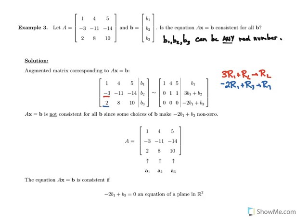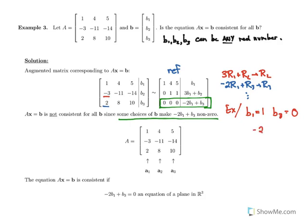Continuing the row reduction to echelon form, we can see that the system is not consistent for all B because of the last row. There are some choices of B — for example B1 equals 1, B3 equals 0 — that give −2(1) + 0 = −2, producing a 0 equals −2 contradiction in the last row, making the system inconsistent. So the equation is not consistent for all B.